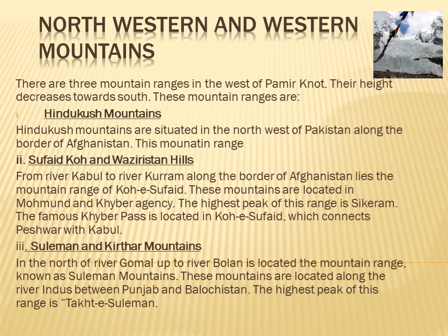Suleyman and Kirthar Mountains: From the north of river Gomal up to river Gulan is located the mountain range known as Suleyman Mountains. These mountains are located along the river Indus between Punjab and Balochistan. The highest peak of this range is Takht-e-Suleyman.